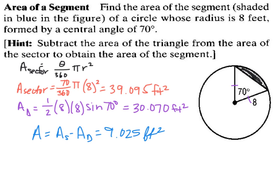Area of a sector: theta over 360 times pi r squared. In this case theta is 70 degrees, you end up with 39.095 feet squared. The area of this triangle—it's a side-angle-side triangle because both of these are radii, they're both 8 feet—so one-half times 8 times 8 times sine 70 degrees, that's 30.070 feet squared. The area of the shaded region is subtracting those two areas: 9.025 feet squared.